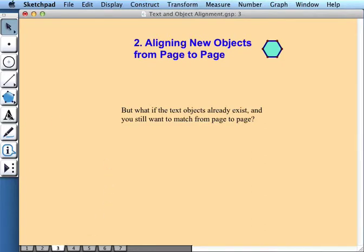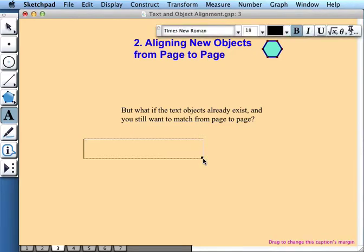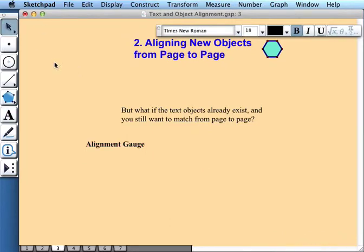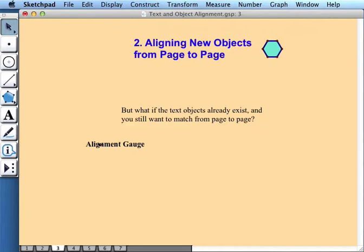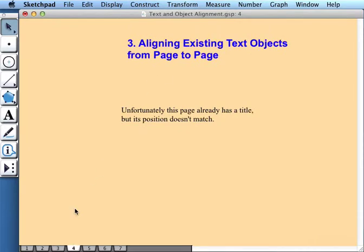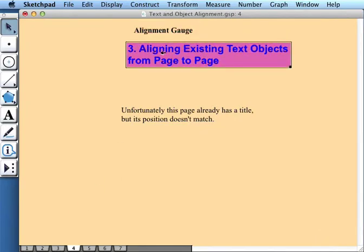Well what I can do is use the text tool to create a new caption, my alignment gauge, and I'll use that alignment gauge to get the title on the next page exactly lined up with this one. And I do it with the same magnetism technique. I use magnetism to put the alignment gauge magnetized exactly above my existing title, I copy it, I go to the next page, I paste it, and now I can take